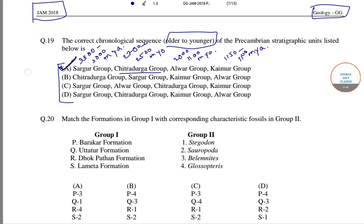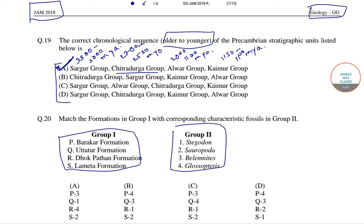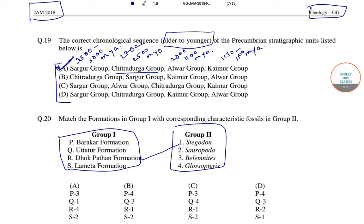Now let's move to the next question. Here we have to match the formations given in group 1 corresponding to the fossils given in group 2. The first fossil, Siwalik, is found in the Dhokpathan formation, so R is linked with 1.